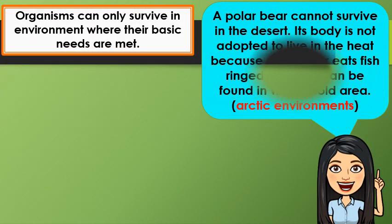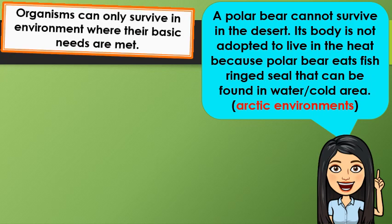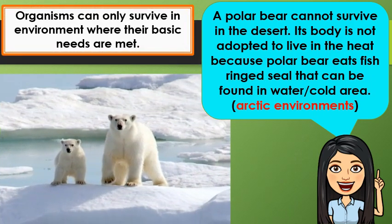Another example is a polar bear. A polar bear cannot survive in the desert. Its body is not adapted to live in the heat because polar bears eat fish and ringed seals that can be found in water or cold areas. So the environment that is suitable for polar bears is the arctic environment.